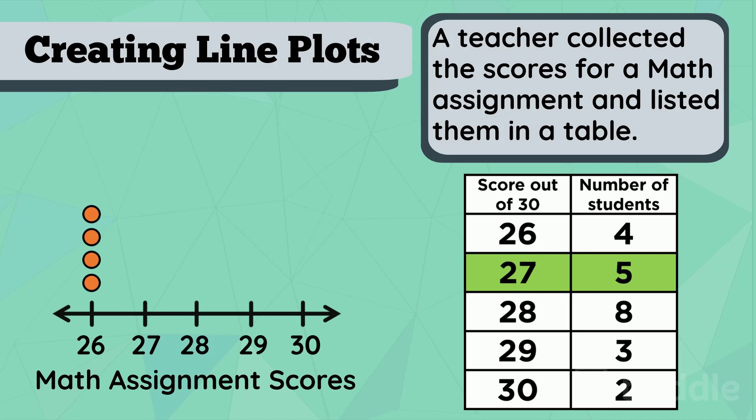Next, five students scored 27. So that's five dots above 27. Eight students scored 28. So we have to draw eight dots above the number 28. Oh, that's a lot.